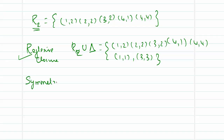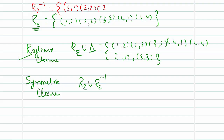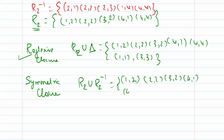For the symmetric closure of R2, we take R2 ∪ R2 inverse. R2 inverse is obtained by flipping: (1,2)→(2,1), (2,2)→(2,2), (3,2)→(2,3), (4,1)→(1,4), (4,4)→(4,4). Taking the union with R2: add (2,1); (2,2) is already there so ignore; add (2,3); add (1,4); (4,4) is already there. All elements now have their inverses included inside the set, so this new relation is the symmetric closure.